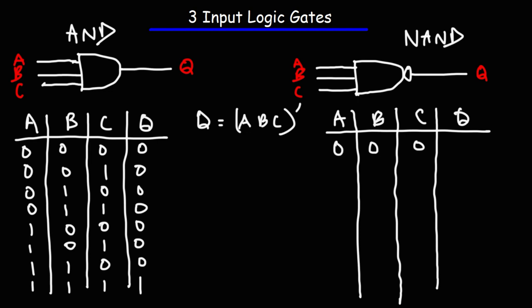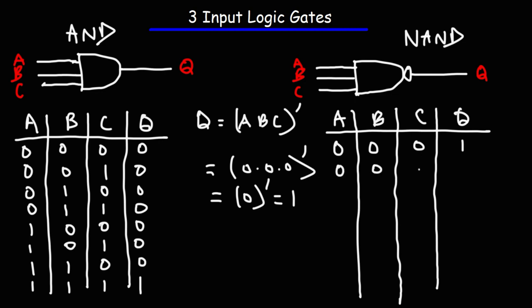Let's write up a truth table for the NAND gate. If all three inputs are off, using the formula: 0 × 0 × 0 = 0, and the complement of 0 is 1, so the output is 1. For the NAND gate, the output is always going to be 1 unless all three inputs are active.